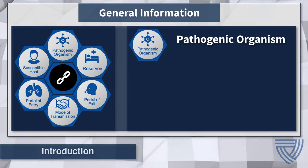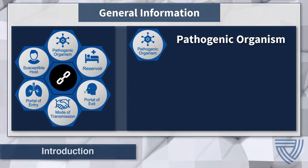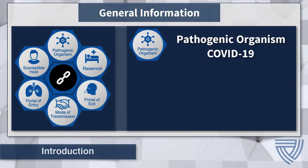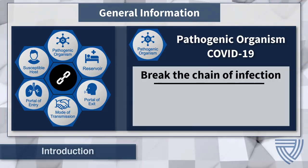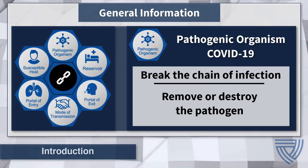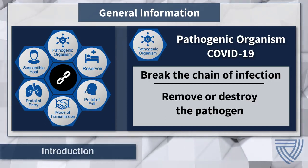The chain of infection begins with the presence of an infectious agent or pathogenic organism. For our purposes, we will describe the chain of infection for COVID-19, the novel coronavirus formerly known as 2019-nCoV. To break the chain of infection and prevent the spread of a pathogen like COVID-19, the pathogen must be removed or destroyed. A health care worker performing hand hygiene with alcohol-based hand rub to disinfect their hands is an example of breaking the chain of infection by destroying pathogens.